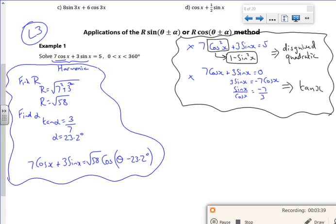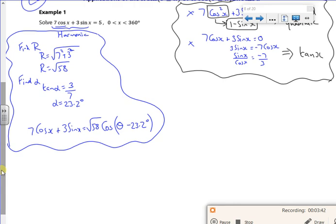So I'm really saying that my equation isn't 7cosx + 3sinx = 5. So like 7cosx + 3sinx is 5, that actually becomes √58 cos(x - 23.2°) = 5.